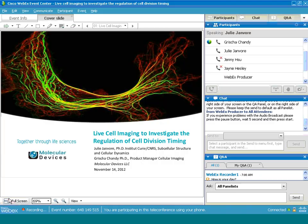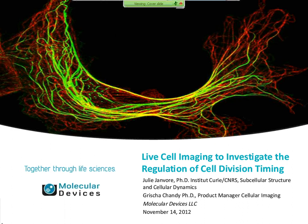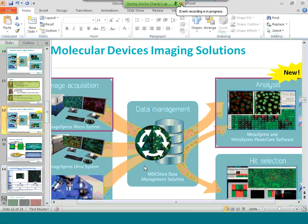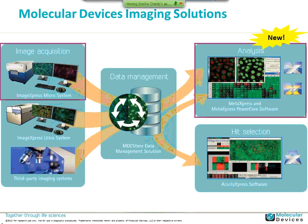Thank you, Julie — very elegant work. Before we turn to questions, I'll do a short refresh on our products. Julie is using older ImageExpress instrumentation, and one of the things she had to do was collect multiple sites to gather enough statistics, enough cells. We talked to people doing cell biology work like that, and screeners, who found that collecting enough cells to get the statistics they needed was a bottleneck in the workflow. So we've made some improvements to the ImageExpress line, and I'll talk about what we've done new with ImageExpress.